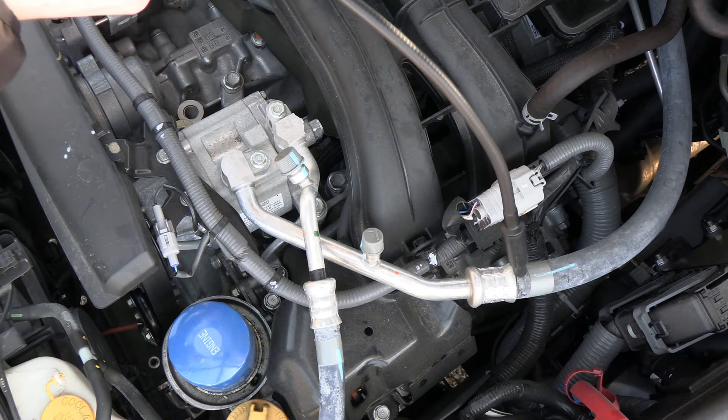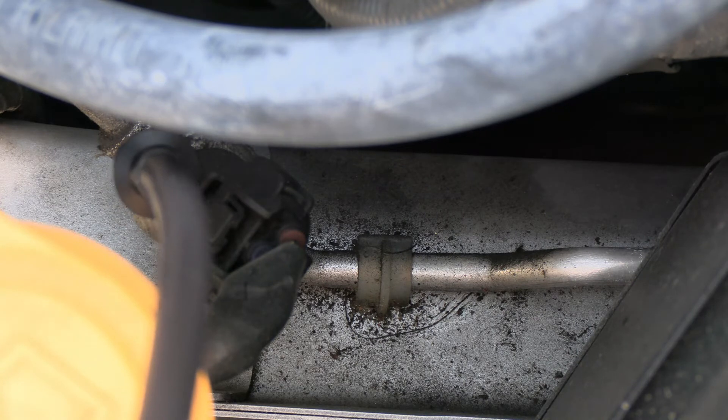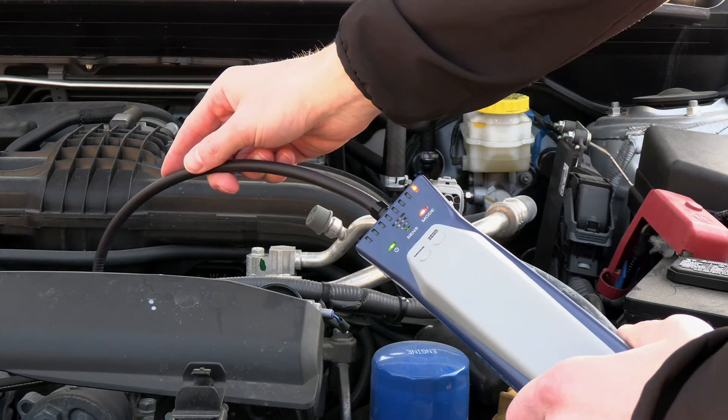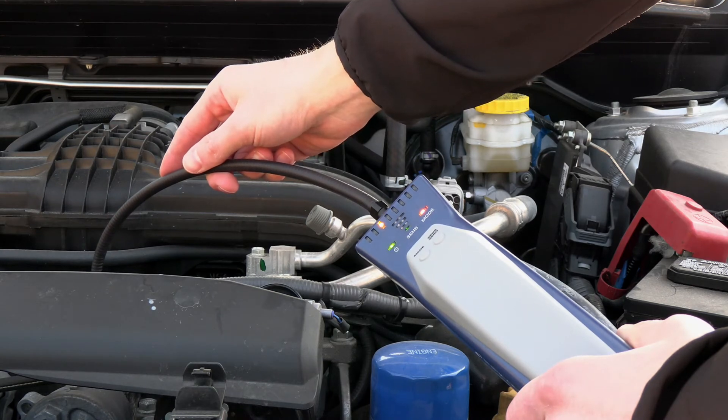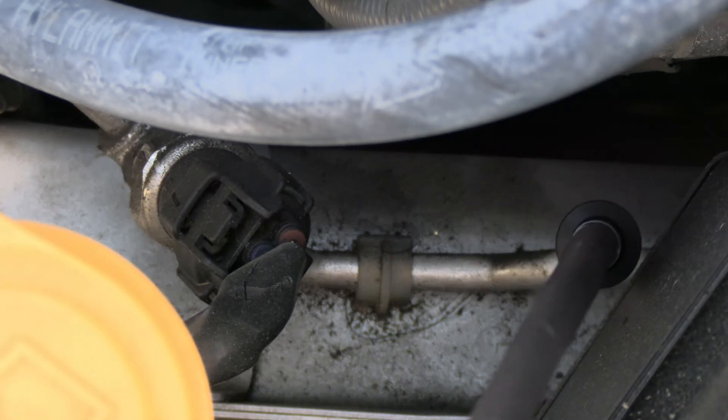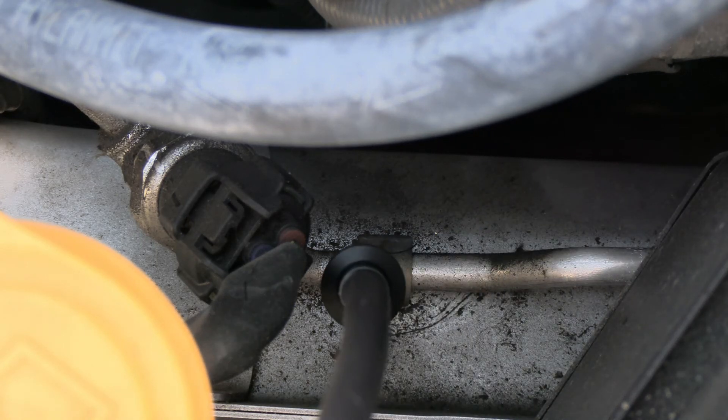If a leak is detected AST 200 IR alarms and the leak indicators illuminate. When the alarm stops AST 200 IR has zeroed to the background. Now you can continue looking for a higher concentration of refrigerant to pinpoint the leak location.